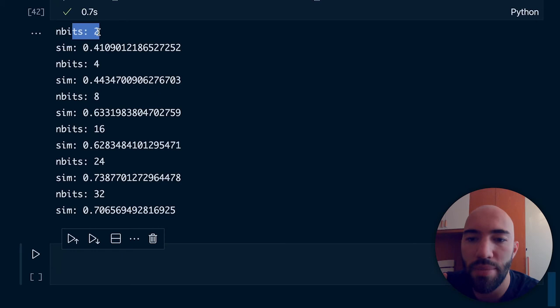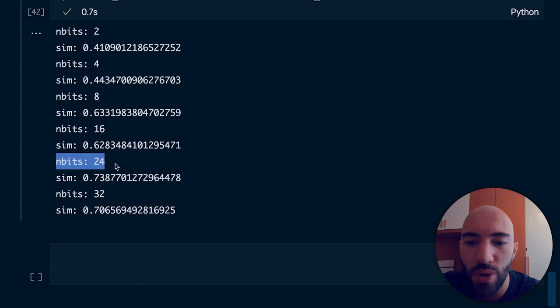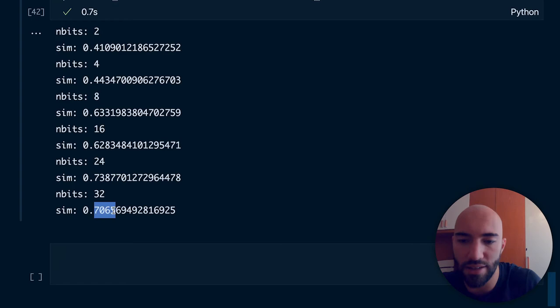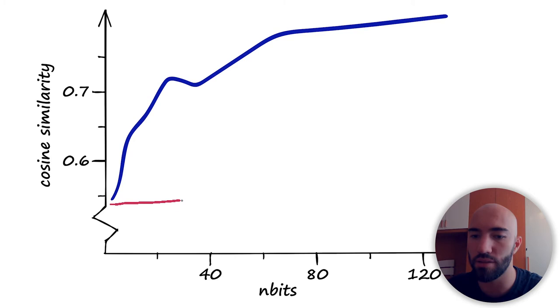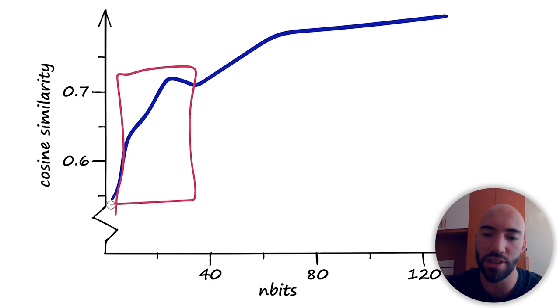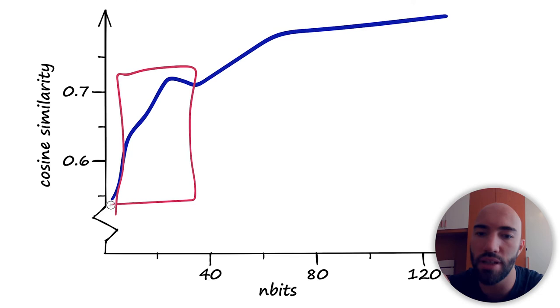Looking at the results: n_bits of 2 is terrible, then it gets better and better, and at n_bits of 24 — where we have about 0.05 items per bucket on average — we get the maximum similarity value of around 0.73 to 0.74. Then it comes off a little bit. I've visualized that here: as we increase n_bits, the cosine similarity shoots up really quickly in the region where we're heavily reducing the number of vectors per bucket, and then we get a slower continuing increase afterwards.